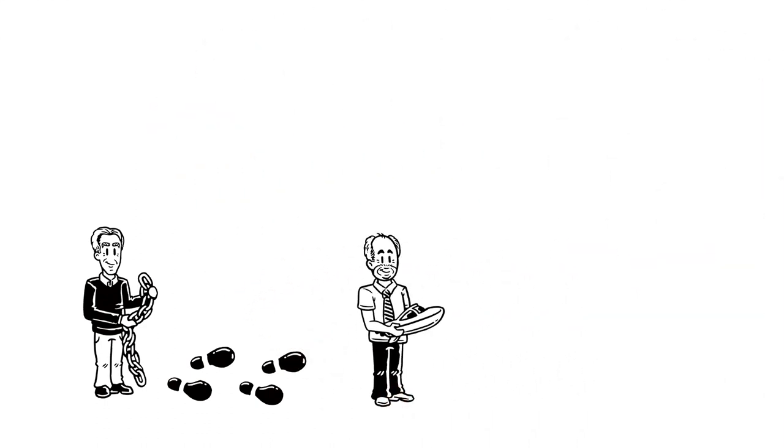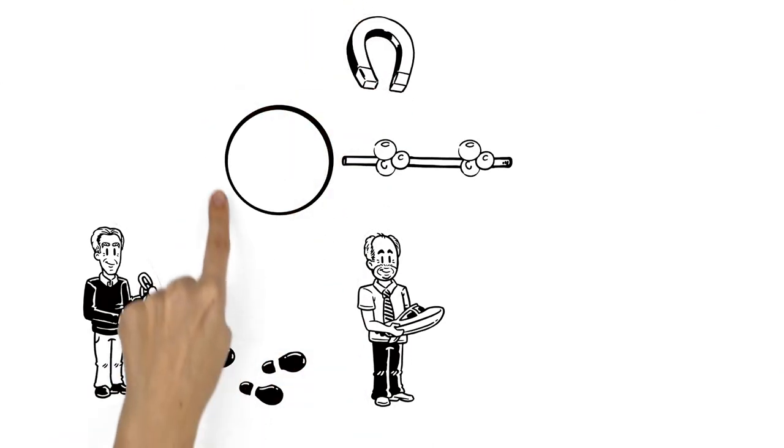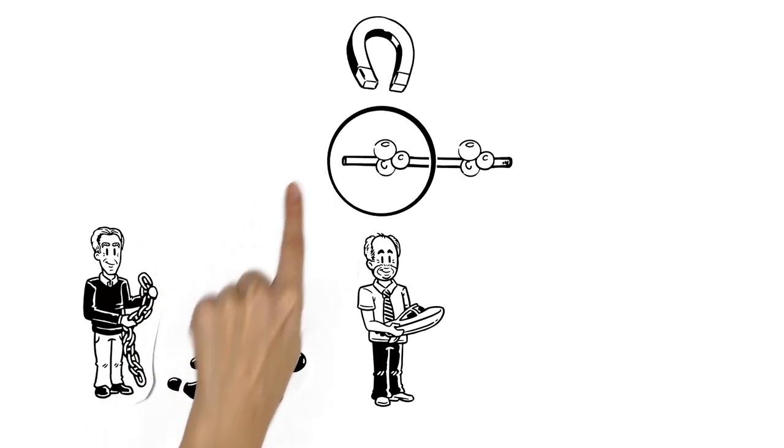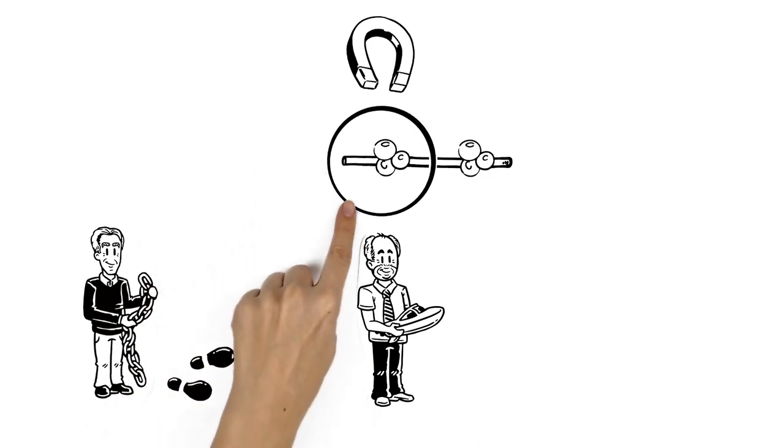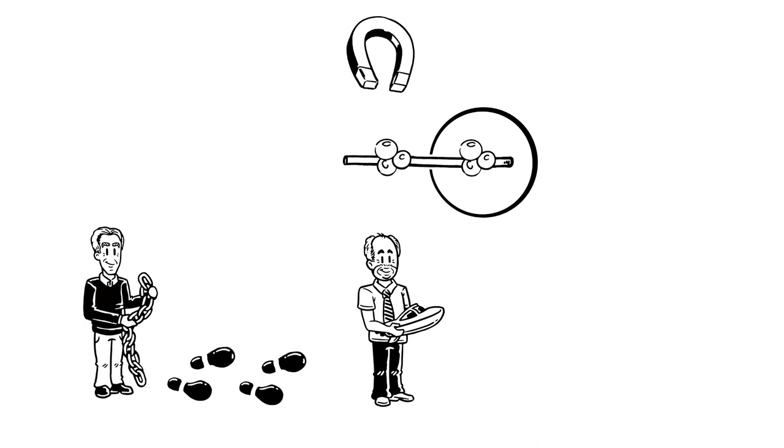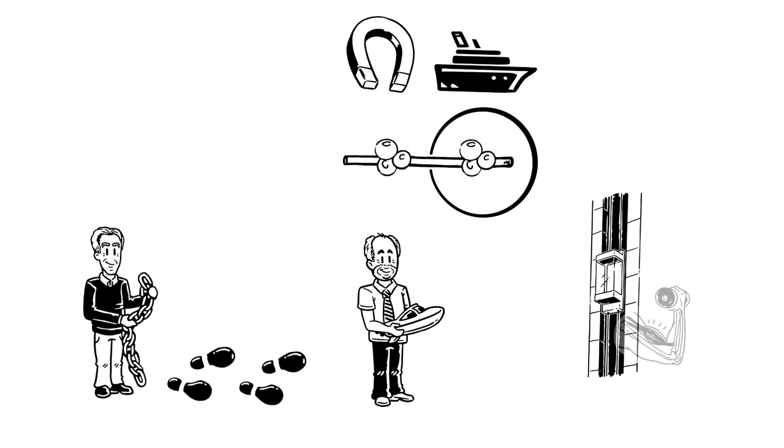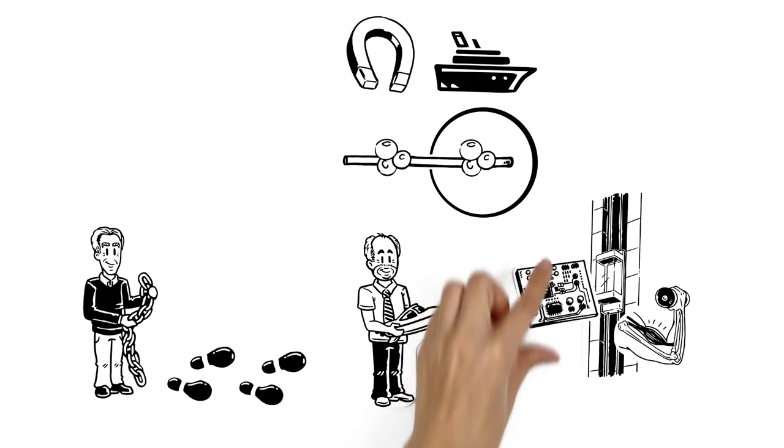Fraser Stoddart later built an open ring with no electrons and an electrically charged axle. The ring was attracted to the electrons and threaded itself onto the axle. With the ring closed, it jumped between the electron-rich areas of the axle like a tiny ferry. Stoddart has also designed a tiny lift, a muscle and a super-tiny computer chip.